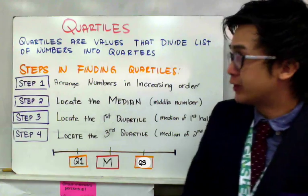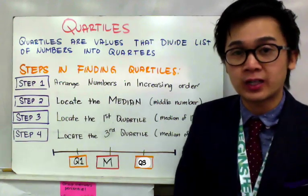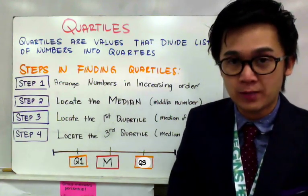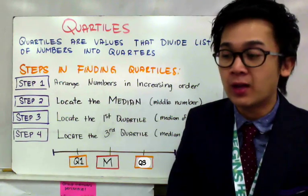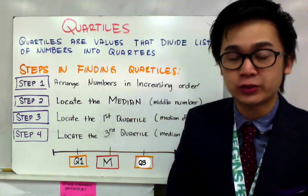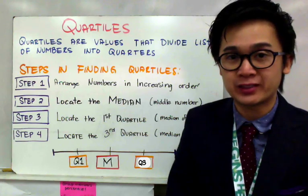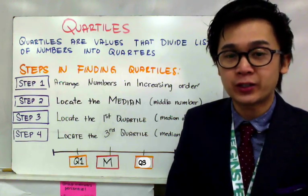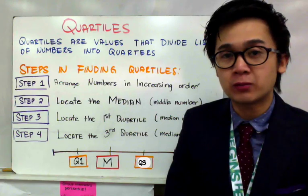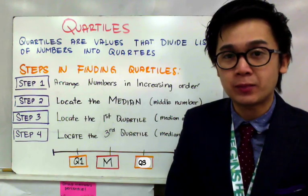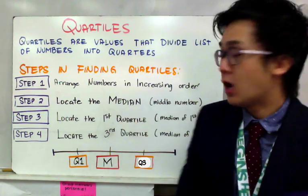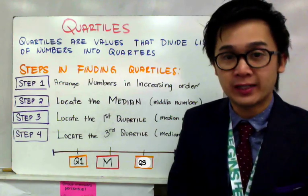The first step: since it's an unorganized list, we're going to rearrange our numbers in increasing order — from the smallest number to the highest number. So, the first step is ordering or arranging your numbers from least to greatest. After you arrange your numbers from least to greatest, you can do step number two, which is finding the median of your list of numbers.